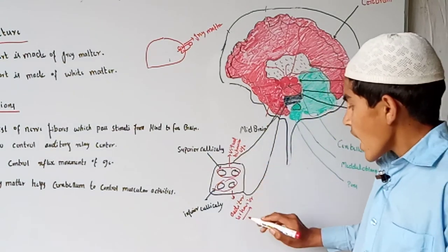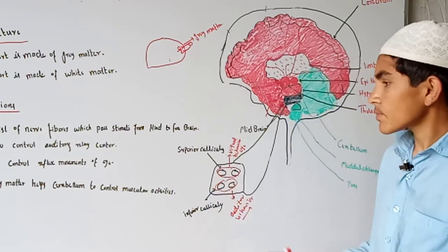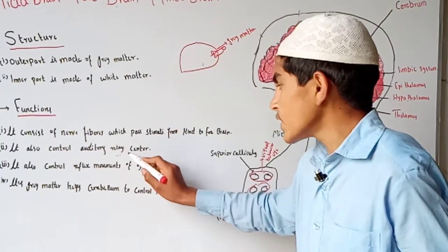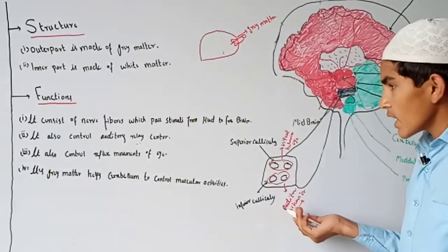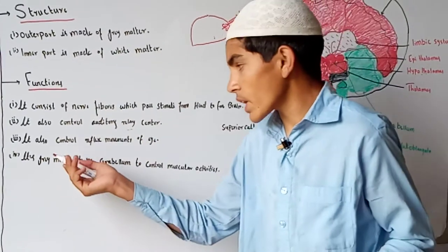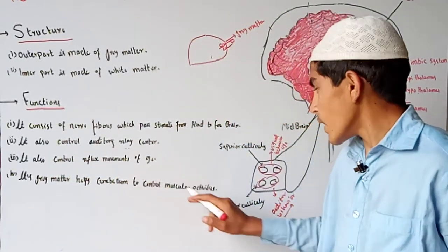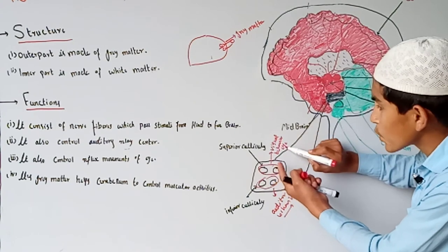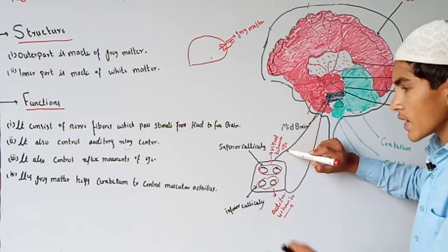The midbrain also controls auditory behavior. It is involved in listening. The inferior colliculi control the auditory relay center, while the superior colliculi control the reflex movement of the eye.